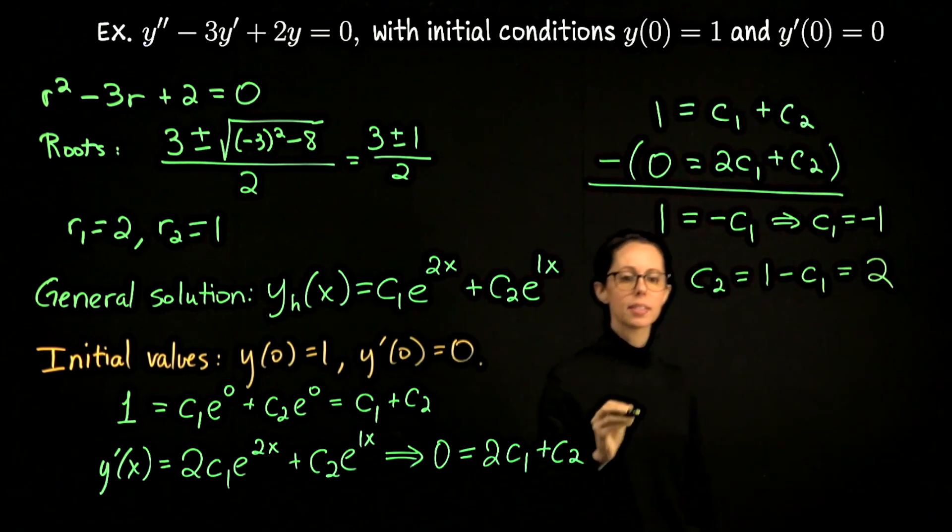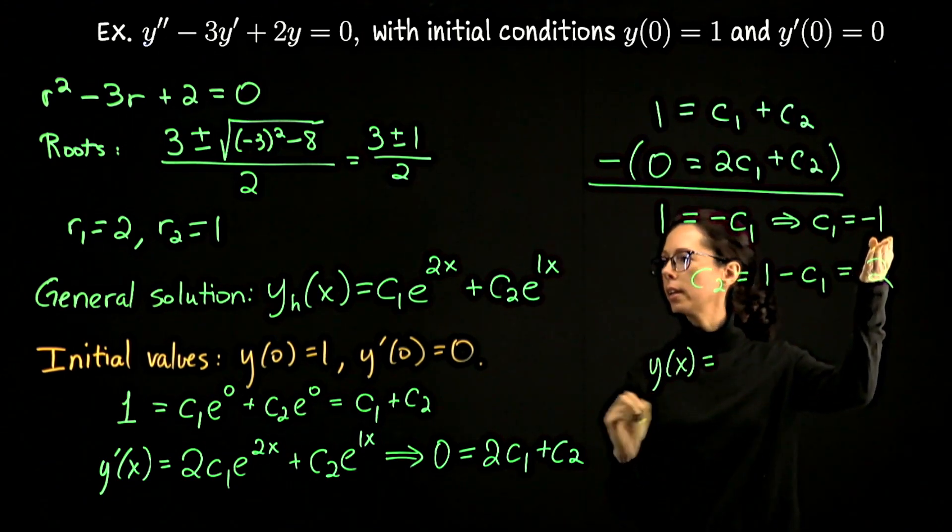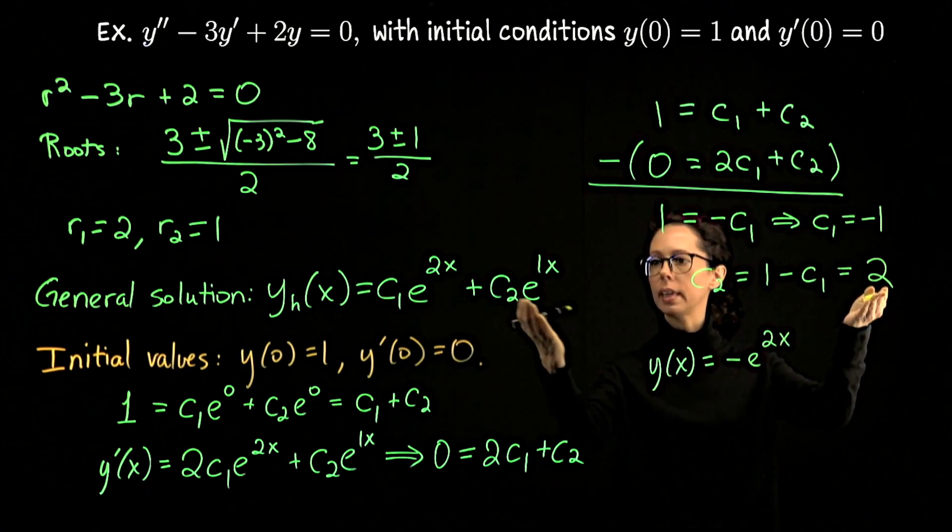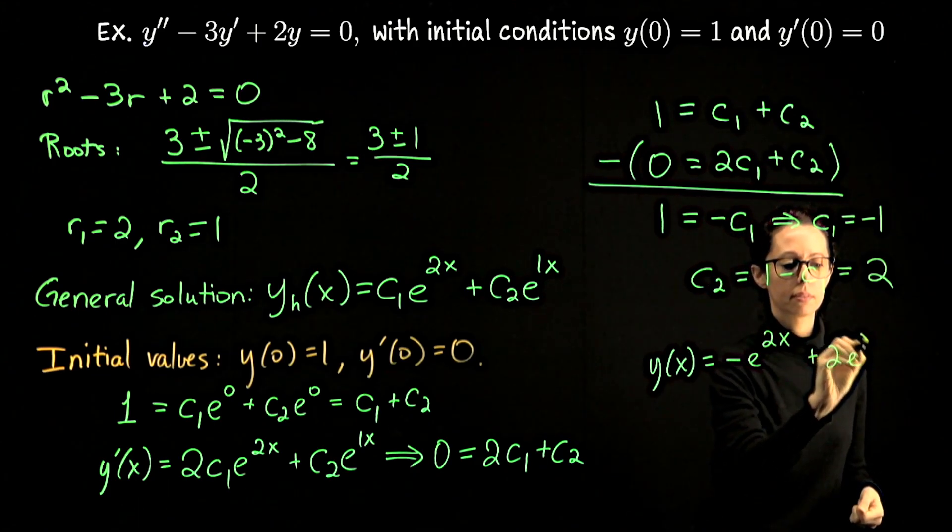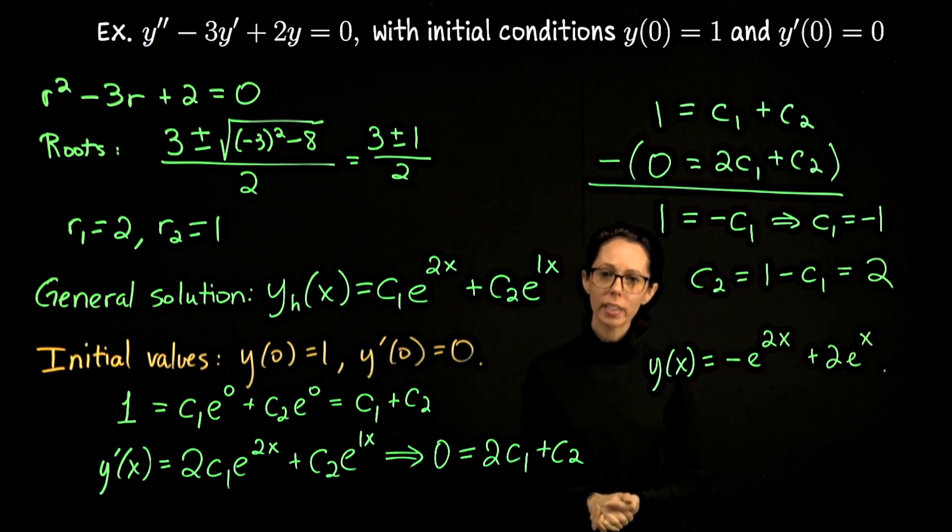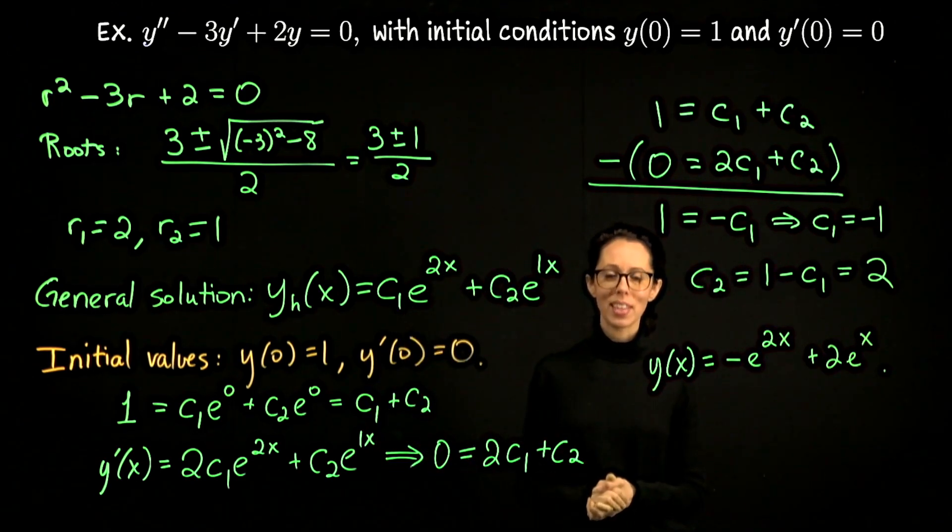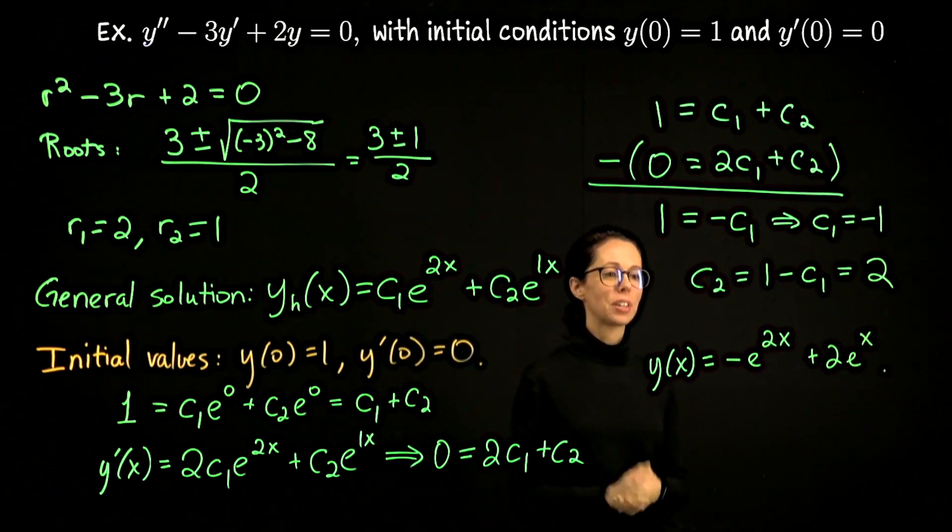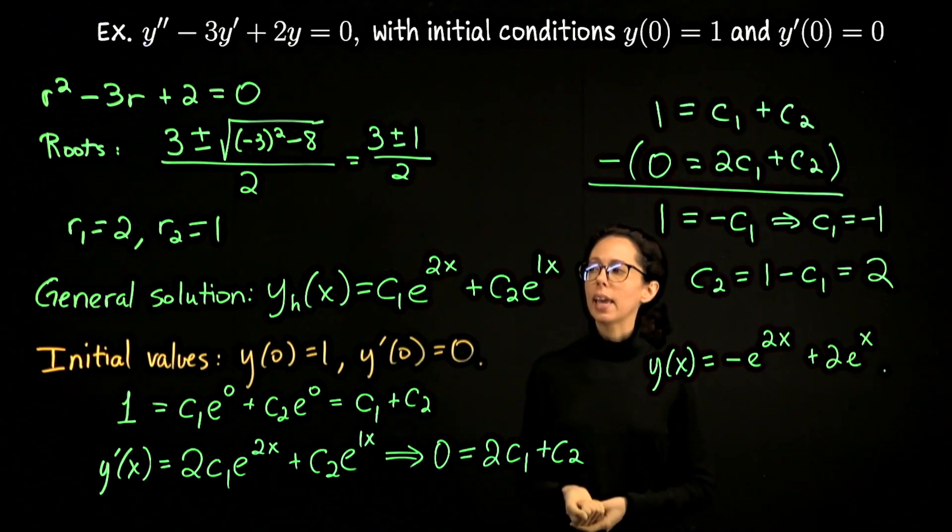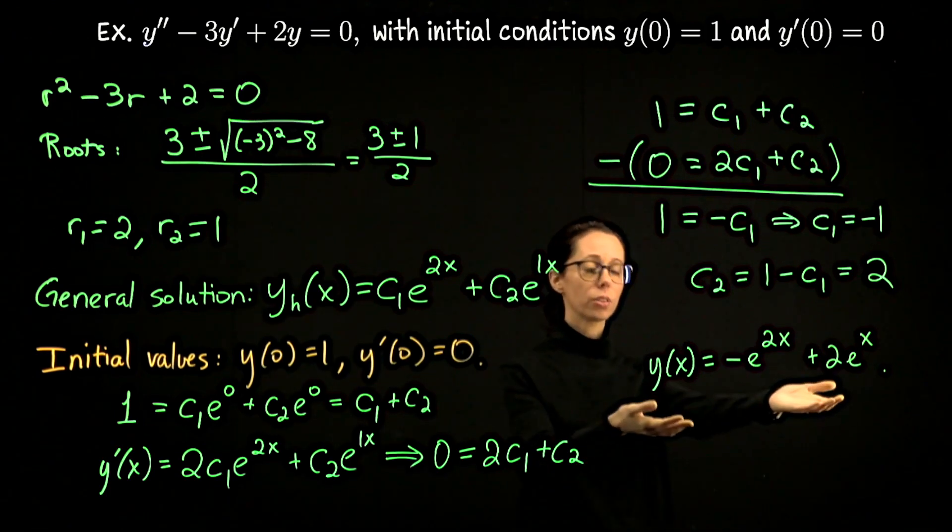So those are the constants now, which means that the solution to the initial value problem is going to be negative 1 times e to the 2x. So e to the negative 2x plus 2 e to the x. And that's it. So whenever we have real and distinct roots, our differential equations are going to be solved very similar to this. I'm just going to do one example of this, and hopefully now you feel ready to take any linear second order differential equation with constant coefficients, which has real and distinct roots, and set up the general form of the solution. And then if you have initial conditions, find the solution to the initial value problem.